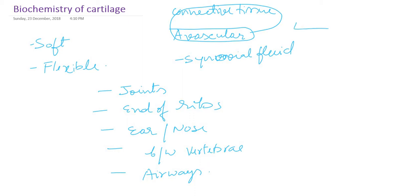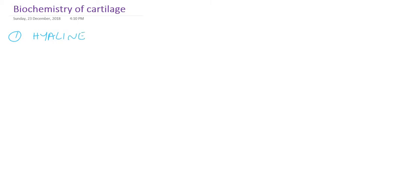So cartilage is a connective tissue, it is avascular, and it derives its nutrients from the synovial fluid, adjacent tissue, or perichondria. There are three types of cartilage. The first type is called hyaline or articular cartilage. The second type is called elastic cartilage, and the third group is called fibroelastic cartilage. The biochemistry of these cartilages is almost similar, with only minor differences.